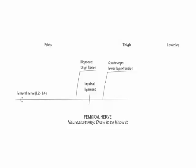Now show the proximal sensory segments of the femoral nerve. It provides the anterior cutaneous nerve branches, which cover the anterior thigh. They are subdivided into the medial and intermediate nerves of the thigh. The lateral femoral cutaneous nerve, which is commonly disrupted, is derived directly from the L2 and L3 nerve roots and not the femoral nerve.